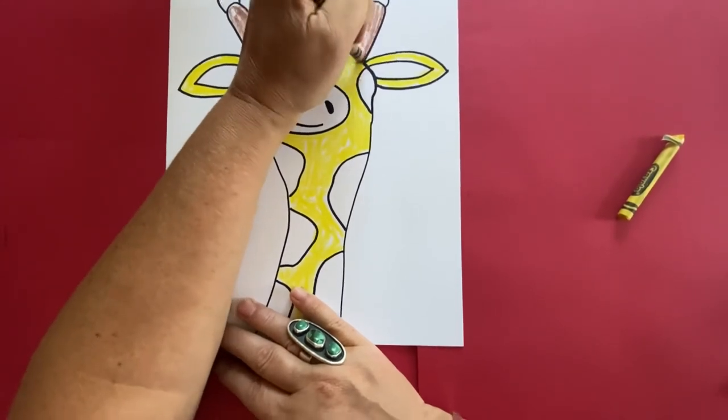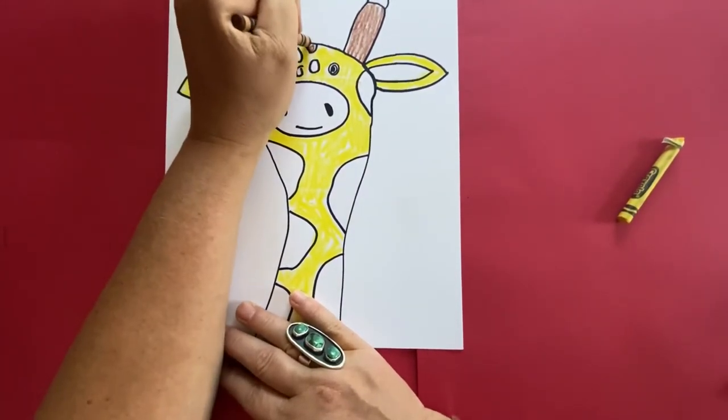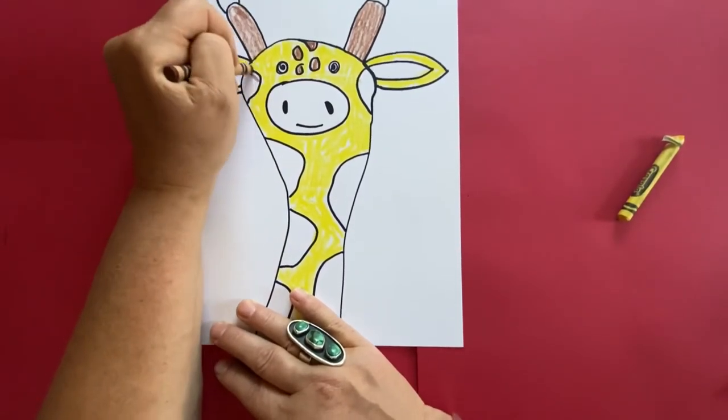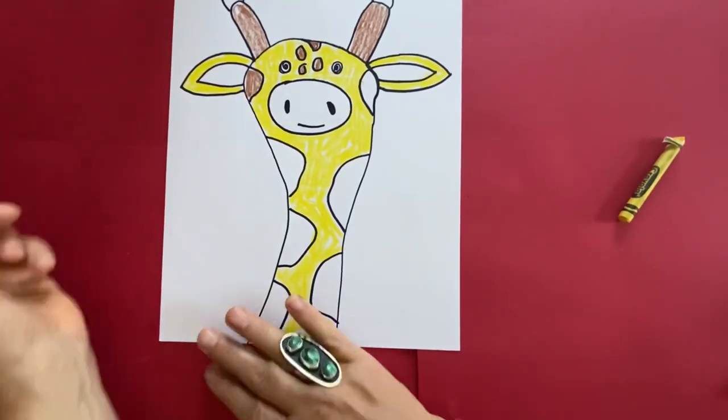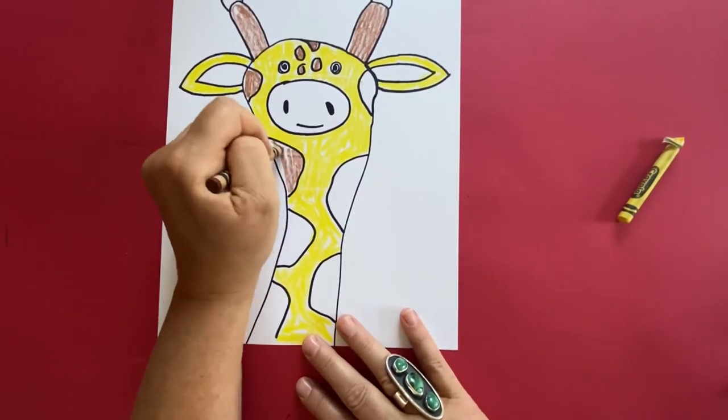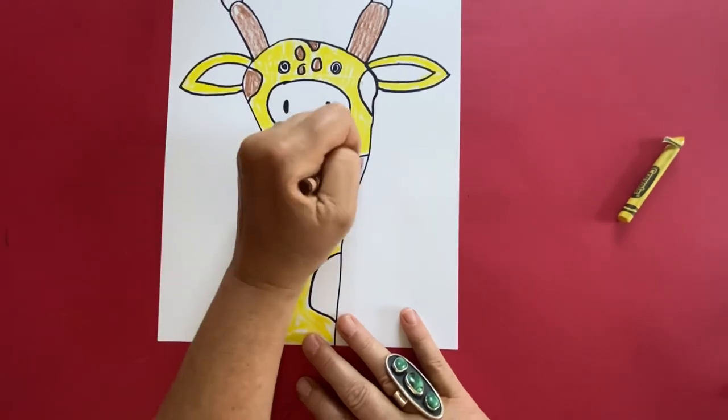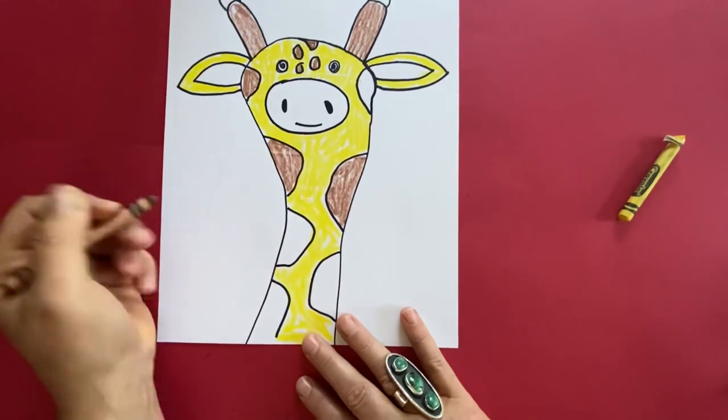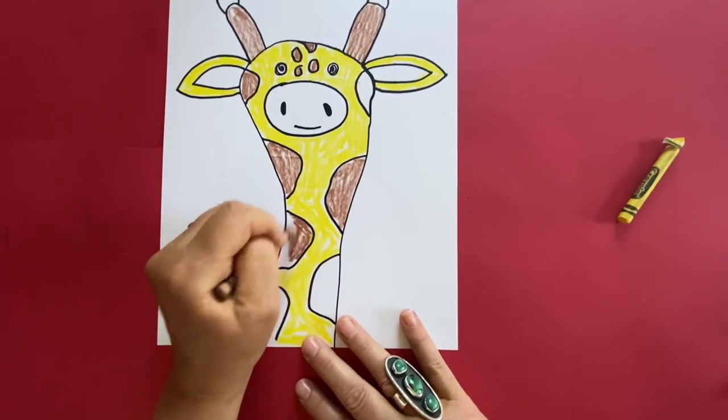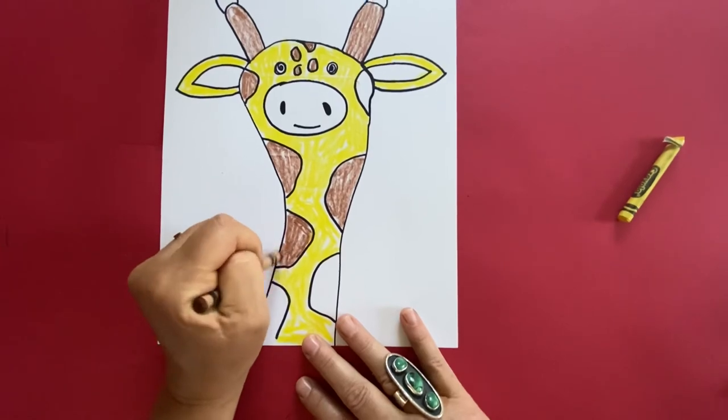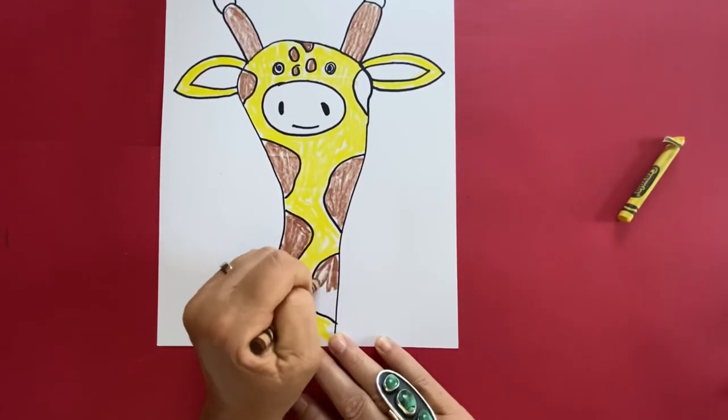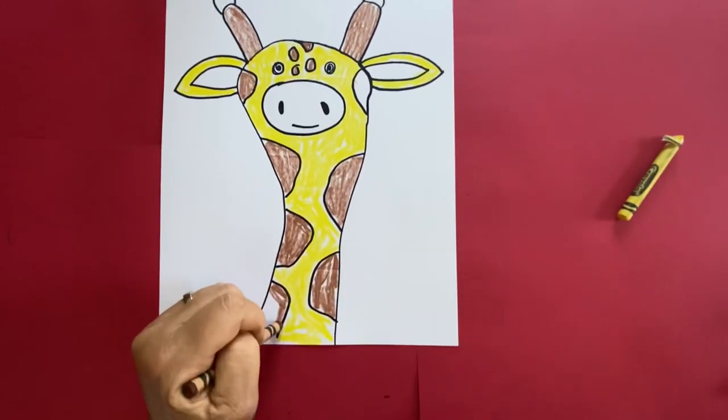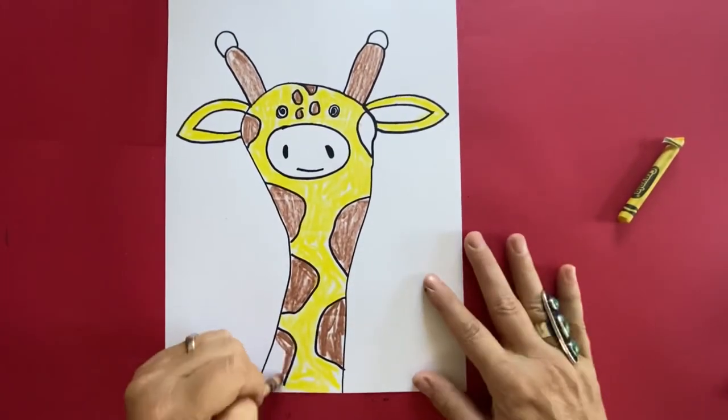Now I'm using my brown to color some of the other things like the spots and the little spots on the head and the ossicones and I'm taking my time doing my very best work. You don't need to rush sometimes working slower and more precise means that your artwork will be neater and we'll have a better turnout so sometimes doing things fast is not better doing things slower is better.